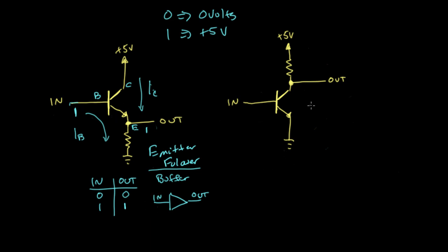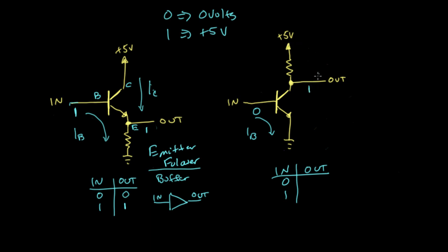Moving on to the circuit on the right — we actually just built one of these. We can look at input and output in the same way. If the input is zero, there's no current flowing across the base, so the transistor will be cut off and the output will be tied through this resistor to plus 5 volts. So our output will be 1. Another name for this resistor is a pull-up resistor, because it basically pulls up this output to 5 volts unless the transistor turns on.